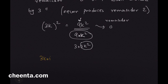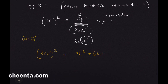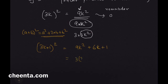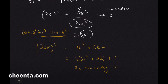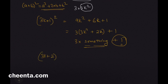Next, take the form 3k+1 and square it: (3k+1)² = 9k² + 6k + 1 using the (a+b)² formula. This can be written as 3(3k² + 2k) + 1, which is 3 times something plus 1. Any number of the form 3 times something plus 1 gives remainder 1 when divided by 3.